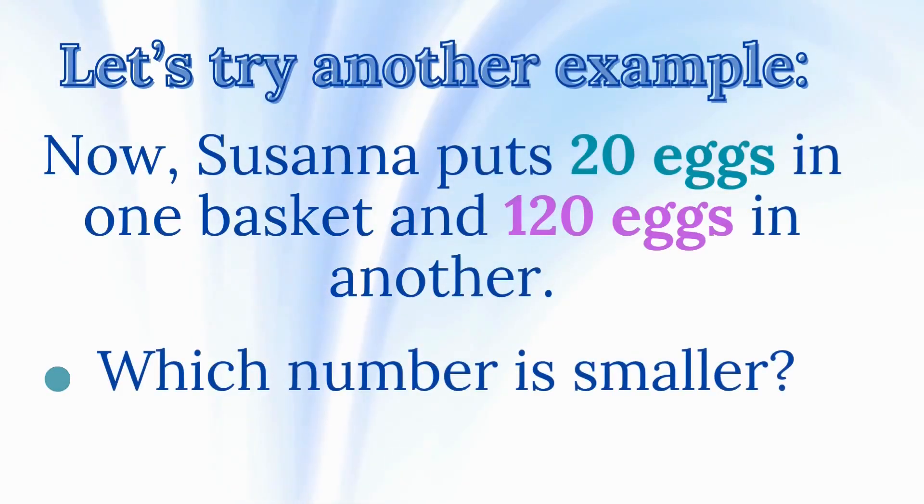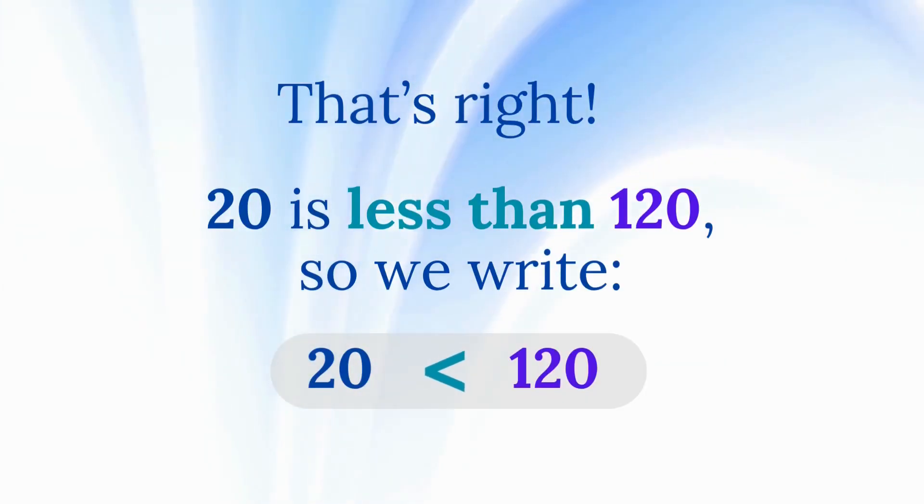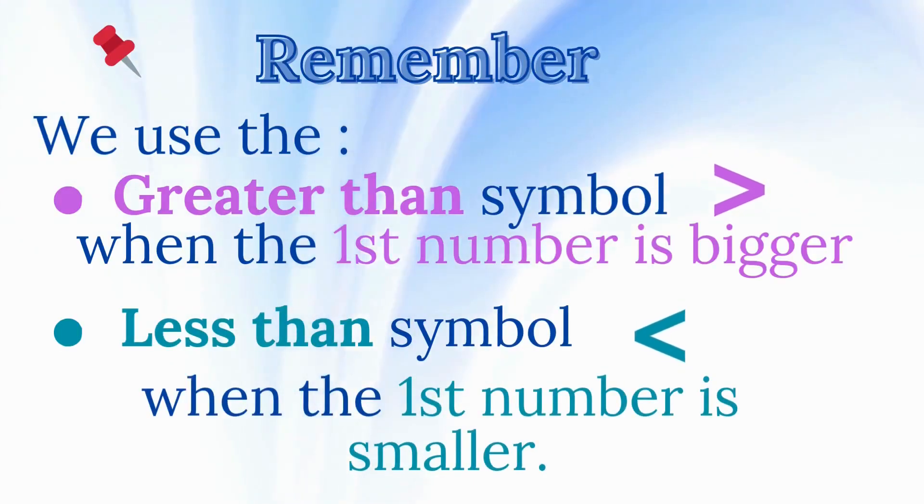Let's try another example. Now Susanna puts 20 eggs in one basket and 120 eggs in another. Which number is smaller? That's right. 20 is less than 120. So we say, 20 is less than 120.